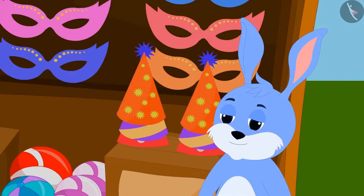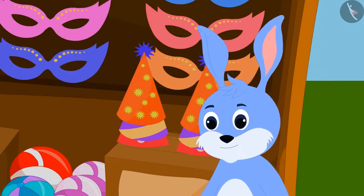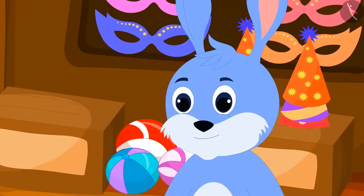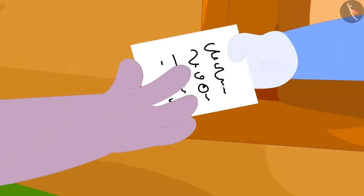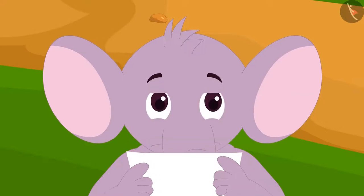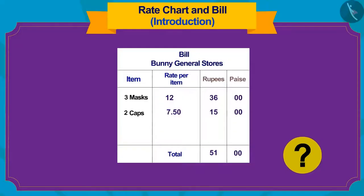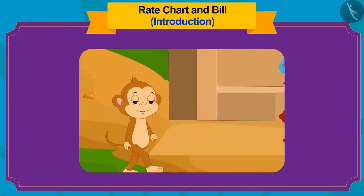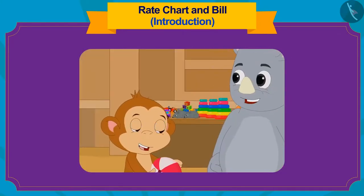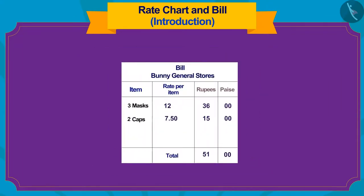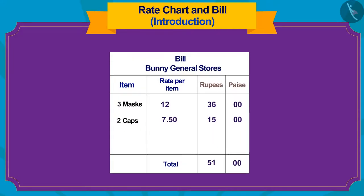Banni asks Appu if he wants to buy any other item, to which Appu denies. Banni immediately wrote something on a slip and handed it over to Appu. After looking at the slip, Appu could not understand anything. Children, have you ever seen a similar slip before? We call it a bill. Whenever we buy items from any shop, the shopkeeper gives us one such bill.